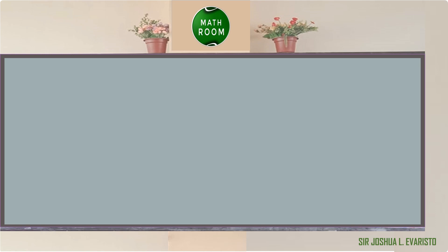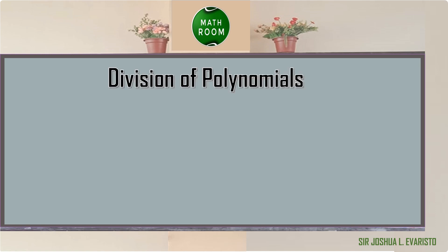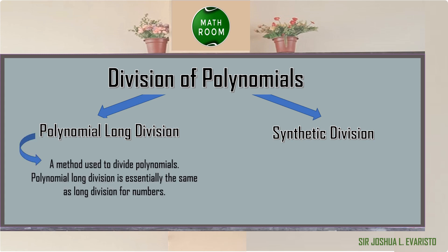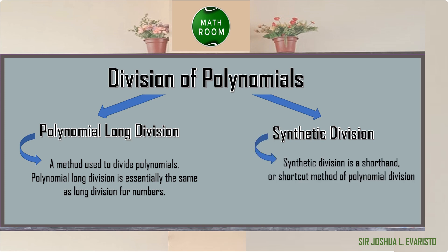Now that you understand what a polynomial is, we can now proceed on the division of polynomials. There are two ways to divide polynomials. The first method is what we call polynomial long division, which is essentially the same as long division for numbers. The second method is what we call synthetic division, which is a shorthand or shortcut method of polynomial division.